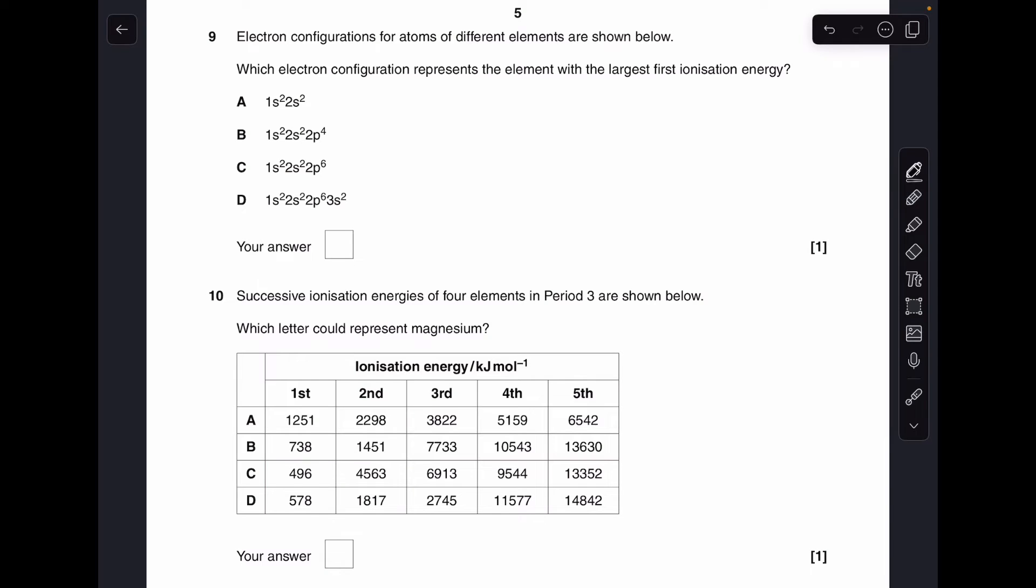Number 9. The first thing I'm going to do is rule out D because that's got three shells. So it's going to be either A, B or C. These are all in period 2. So what's the trend in a period? Generally, the first ionization energy increases as you go across the period. So it's going to be the one furthest to the right. So it's C.